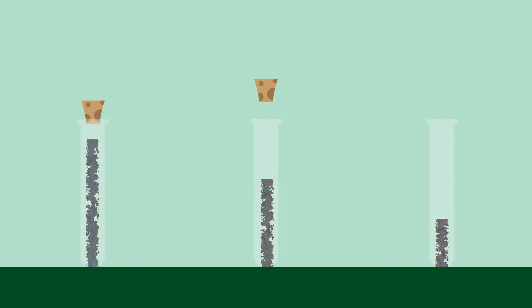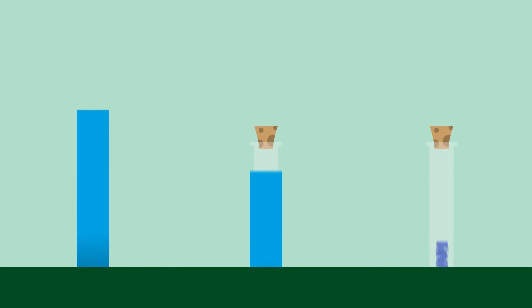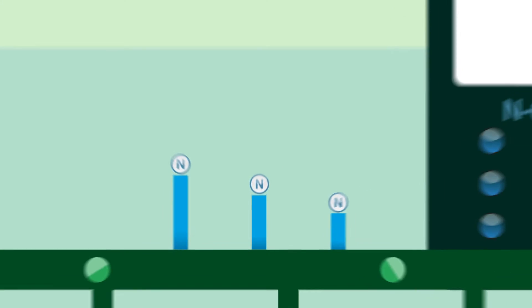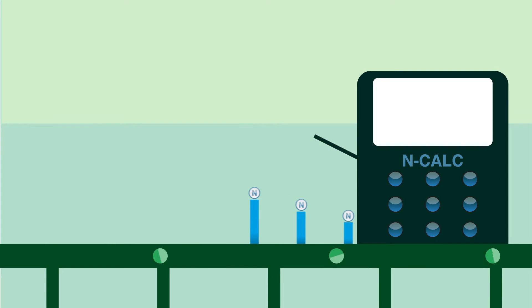Once samples have been collected by the agronomist, they are analysed by an independent lab, and the results are then fed into CF's nitrogen calculator, NCALC.